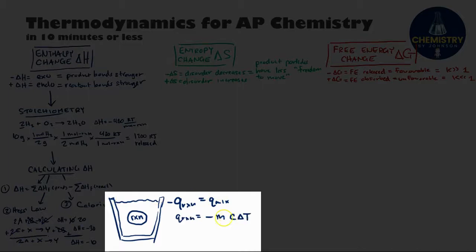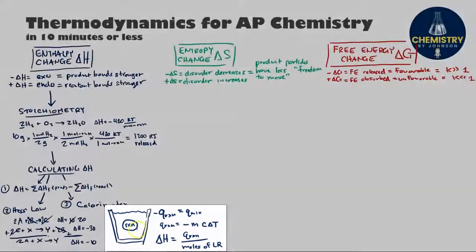I can then solve for the quantity of heat that the reaction released by solving MC delta T for the entire mixture. Finally, I can turn that Q reaction into an enthalpy by simply dividing it by the number of moles of whatever the limiting reactant was in the reaction.